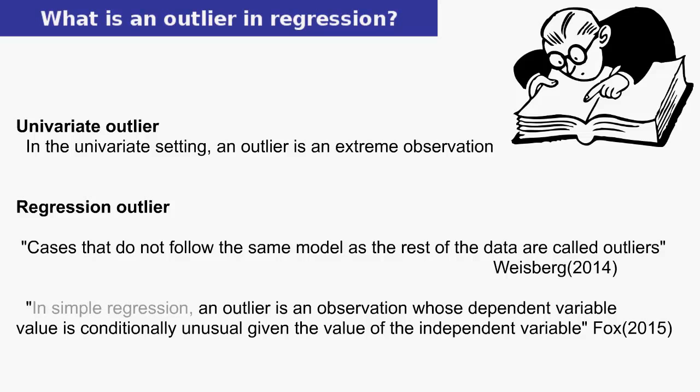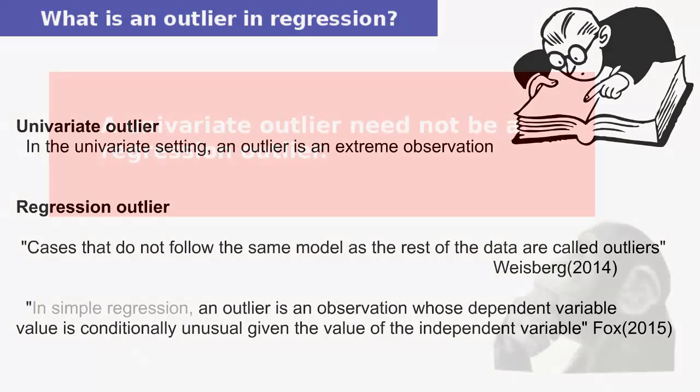In regression analysis, some authors use outlier to refer to all points that appear unusual, as in Fox. Others, like Weisberg, make the distinction that some unusual points legitimately belong to the data and some do not — those that do not belong are called outliers. Confusion comes when students mix these two points of view, so listen carefully to how your professor uses the term. In Fox's view, outliers should not be automatically deleted without investigating the point in the context of the data. In Weisberg's view, outliers do not belong to the data process and are deleted. I shall mainly adopt the second view.